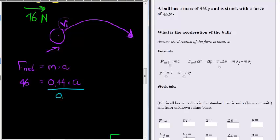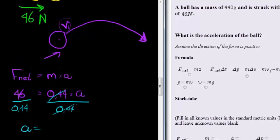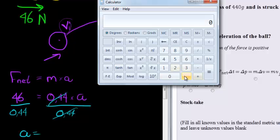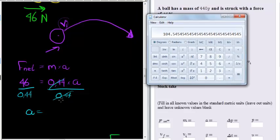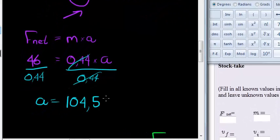Obviously simply dividing with 0.44 on both sides to get acceleration on its own. Let's go calculate: 46 divided by 0.44 equals 104.55 meters per second squared.